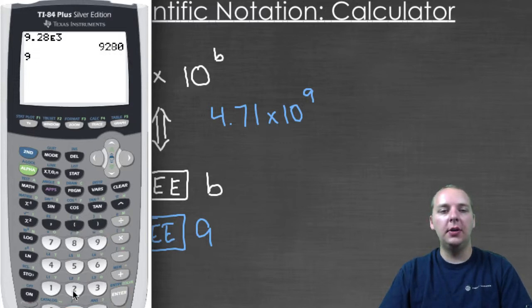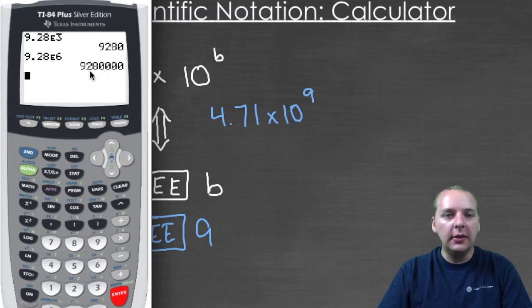If you said nine point two eight EE or times ten to the sixth, then we'd have nine million two hundred and eighty thousand, because we'd move it to the right six places.